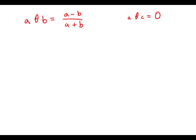So they tell us: if a is not equal to negative c and a theta c equals zero, what is c? Following the equation they give us, a theta c has to equal a minus c over a plus c. And if this equals zero, the only way a fraction can equal zero is if the numerator equals zero.